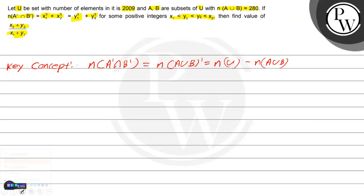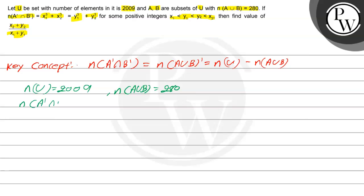So what is given? U is the set with number of elements 2009, so n(U) = 2009. And the number of elements of A∪B is equal to 280. So the formula gives us n(A'∩B') = n(U) minus n(A∪B), which is 2009 minus 280, which is equal to 1729.